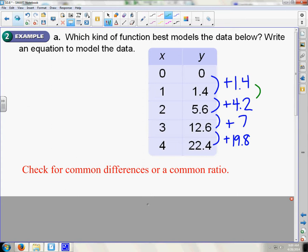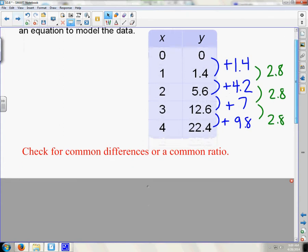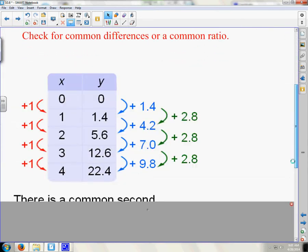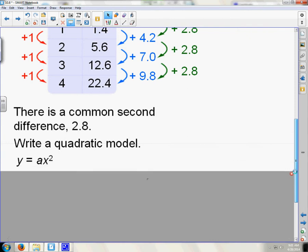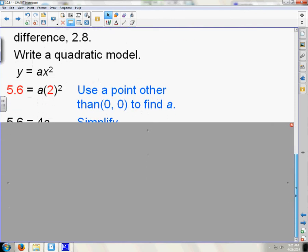And then, if I look between the two numbers, 4.2 minus 1.4, that is 2.8 of a difference. 7 minus 4.2 is 2.8. And 22.4 minus 12.6 is 9.8. And that is 2.8 of a difference. So, if we scroll down, and we look that their second difference is 2.8. This is how we tell if it's a quadratic function. So, this is a quadratic function because of the second difference.